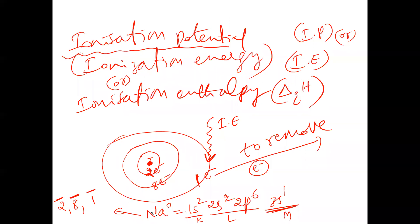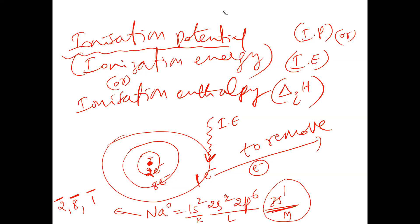We take the example of a neutral sodium atom. Sodium has electronic configuration 1s² 2s² 2p⁶ 3s¹. How many valence electrons? One electron. In the first orbit there are 2 electrons, in the second orbit 2+6 = 8 electrons, and in the third orbit one electron. So the number of outermost electrons is one.